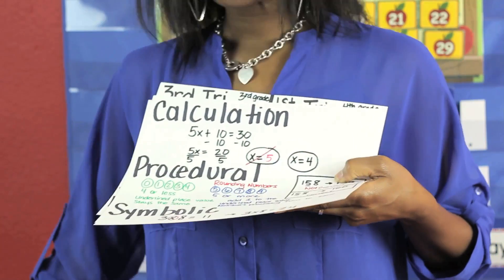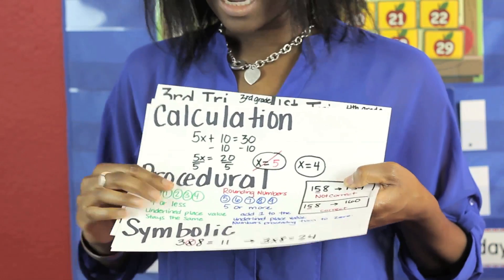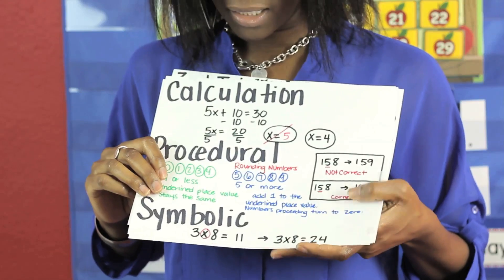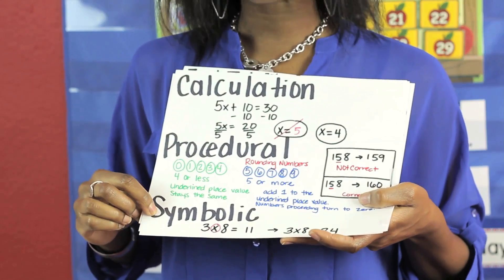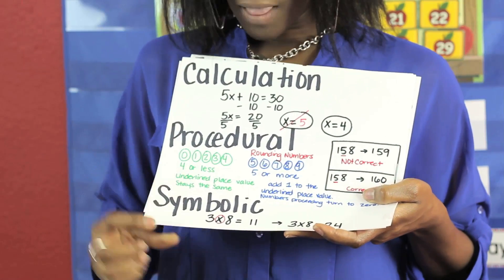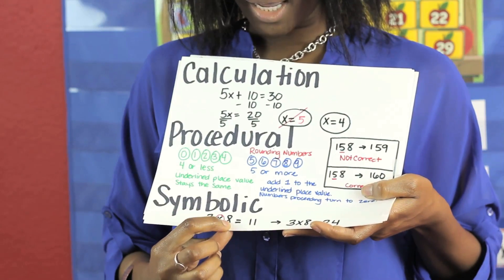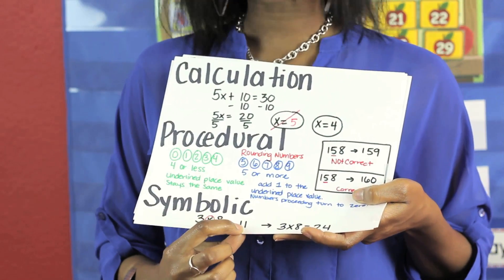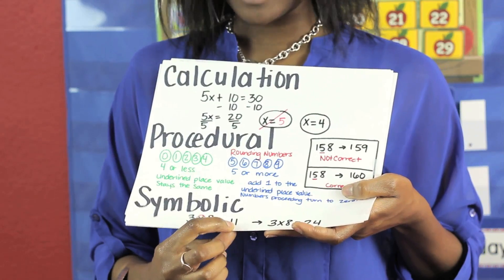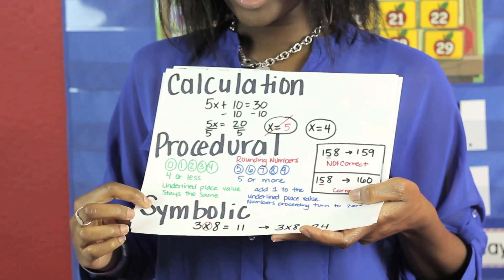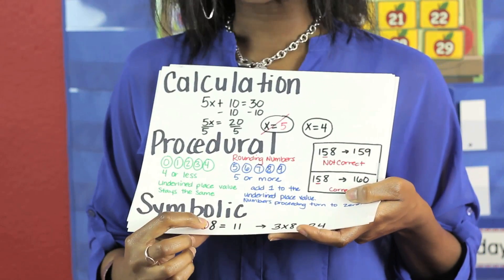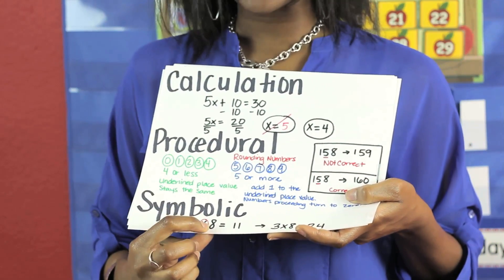The fourth common mistake that students make is symbolic errors. Here I have three times eight — it does not equal 11. This student used the wrong symbol; he was adding.